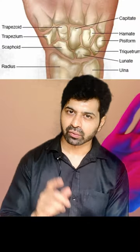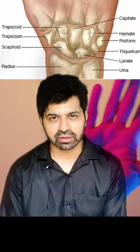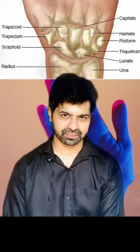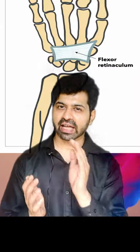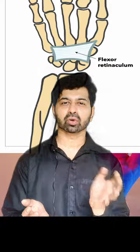The word carpus refers to wrist. Our wrist has eight small bones called carpal bones. These are the list of the bones present at our wrist, and there is a fibrous band covering over these carpal bones,